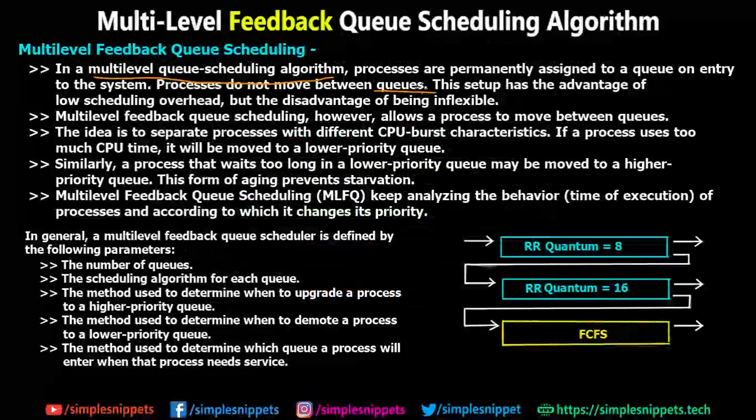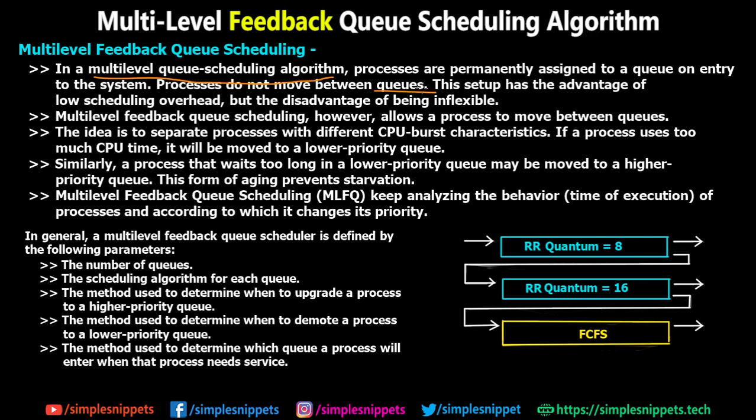By starvation I mean: let's say there are very few batch processes - two or three - however there are 100 system processes. According to multi-level queue scheduling all 100 system processes will be executed first by the CPU, and only then will these two or three batch processes be taken care of, because queue number one assigned for system processes has higher priority over queue number two. So those two or three batch processes are starved and have to wait a lot of time. This is a major drawback in the basic multi-level queue scheduling.